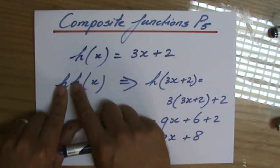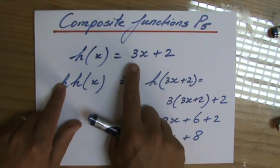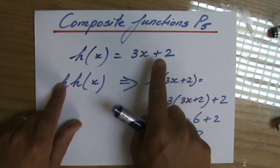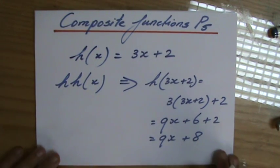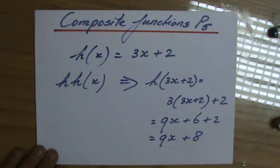So 3x plus 2, so 3 times (3x + 2) plus 2. You work it out, expand those brackets, combine like terms. The answer is 9x plus 8.